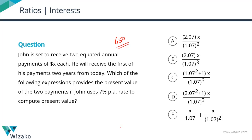Which of the following expressions provides the present value of the two payments if John uses seven percent per annum to compute the present value? We need to pick from one of these five answer options the expression which corresponds to the present value of the two payments he is going to receive.